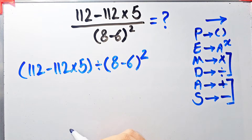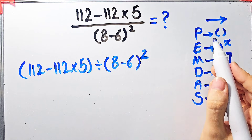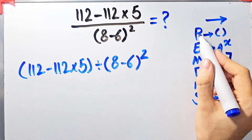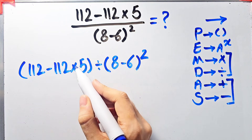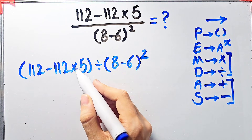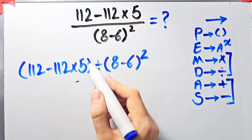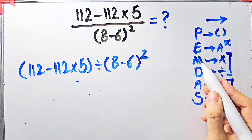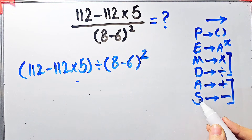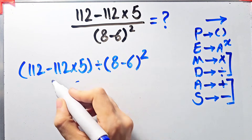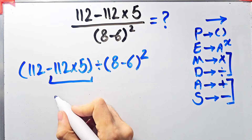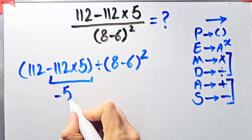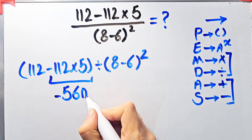According to the PEMDAS rule, first we simplify the parentheses. Inside the first parentheses we have subtraction and multiplication. We do the multiplication first because multiplication has higher priority than subtraction. Negative 112 times 5 equals negative 560.